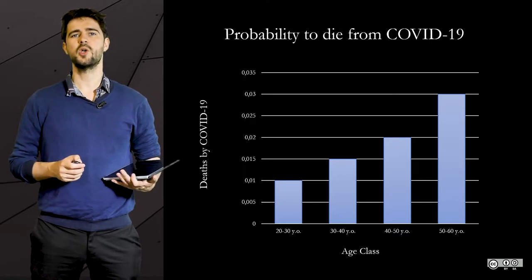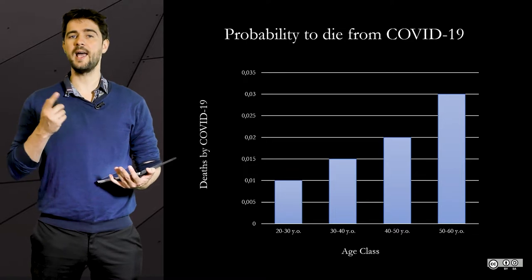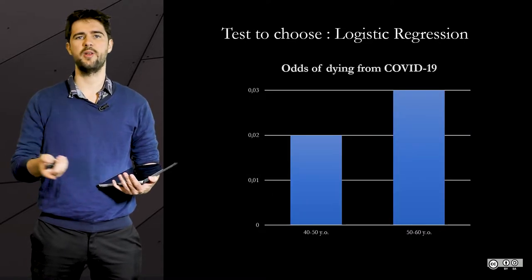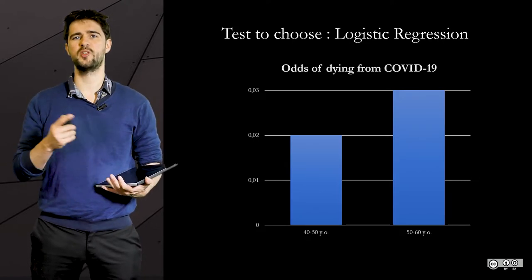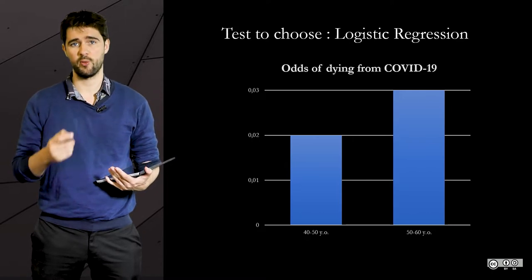So let us say we'd like to know whether the odds of surviving are higher when you are in your 50s than when you are in your 30s or 60s, for instance. This time, you cannot use a student's test or ANOVA. You must use what is called a logistic regression.